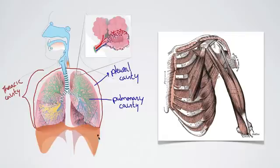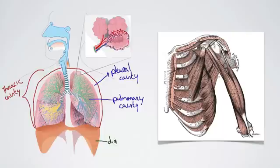Another thing we need to label here — this here is a muscle and that muscle we call the diaphragm. Beneath here we have the abdominal cavity.